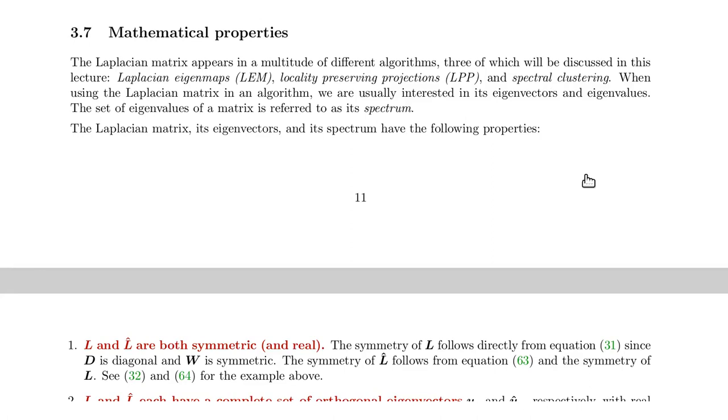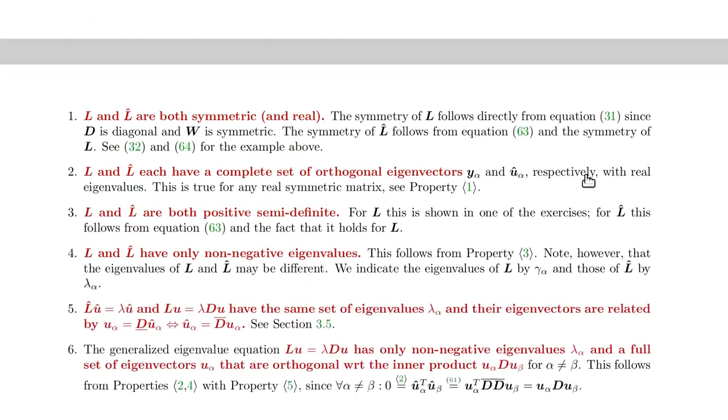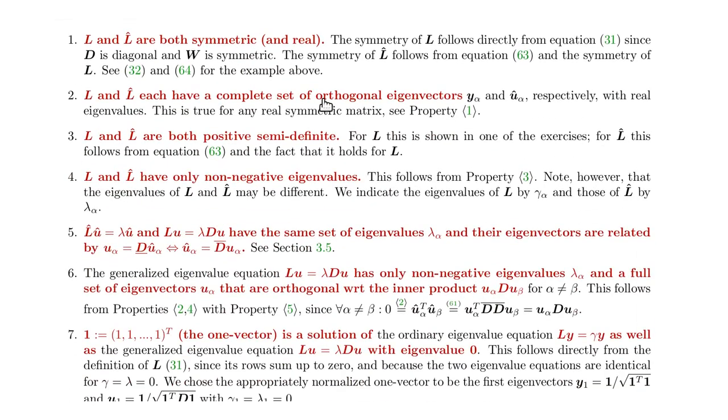So I will now summarize some of the mathematical properties that we have seen so far. We have seen that the Laplacian matrix as well as the normalized symmetric Laplacian matrix are both symmetric and real. That implies that each one has a complete set of orthogonal eigenvectors with real eigenvalues.